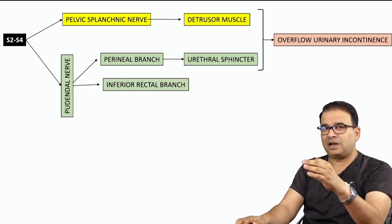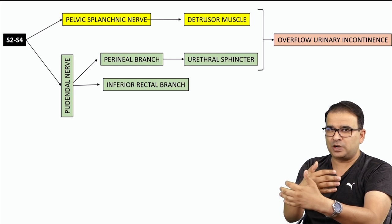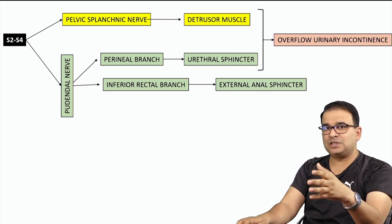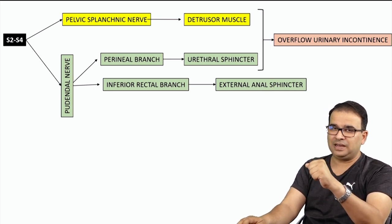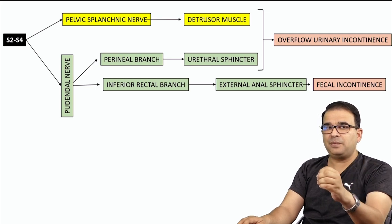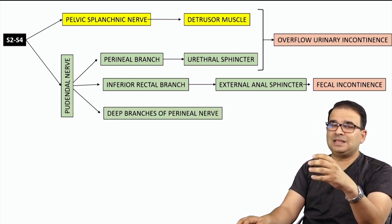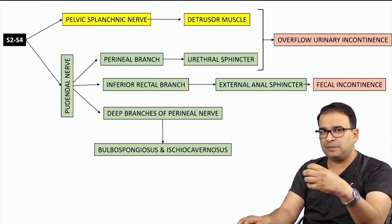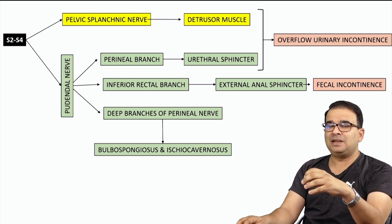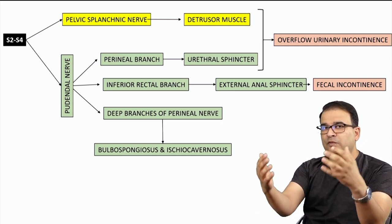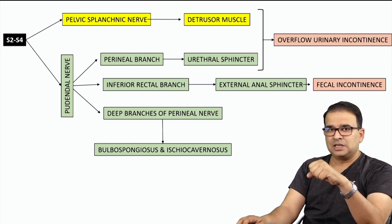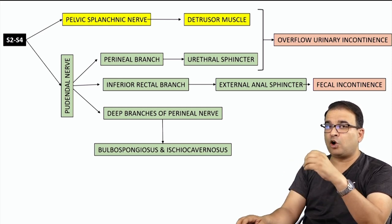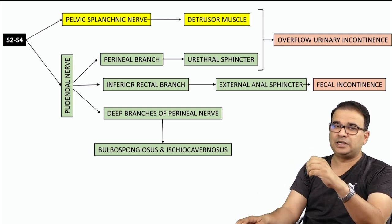The pudendal nerve through its inferior rectal branch — which passes through the ischiorectal fossa — supplies the external anal sphincter. Atonicity of the external anal sphincter leads to fecal incontinence. Additionally, deep perineal branches of the pudendal nerve supply the bulbospongiosus and ischiocavernosus muscles in the superficial perineal pouch, which are important for maintaining erection. When these muscles contract, they obstruct venous blood flow from the superficial veins of the penis. If the pudendal nerve is affected, these muscles cannot contract, leading to impotence.